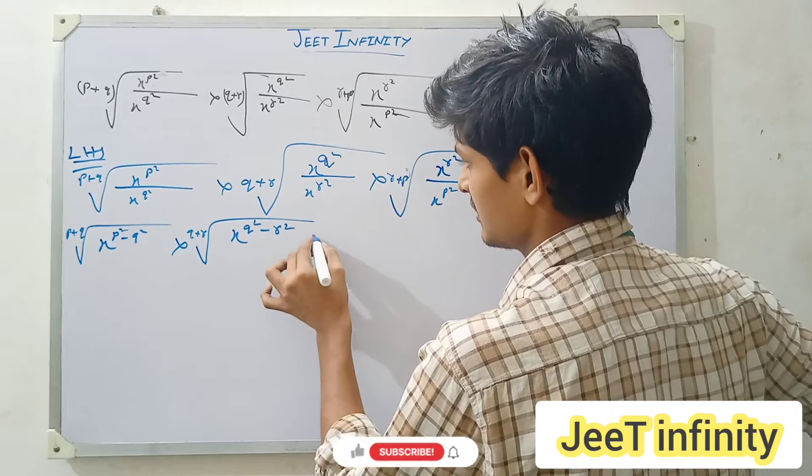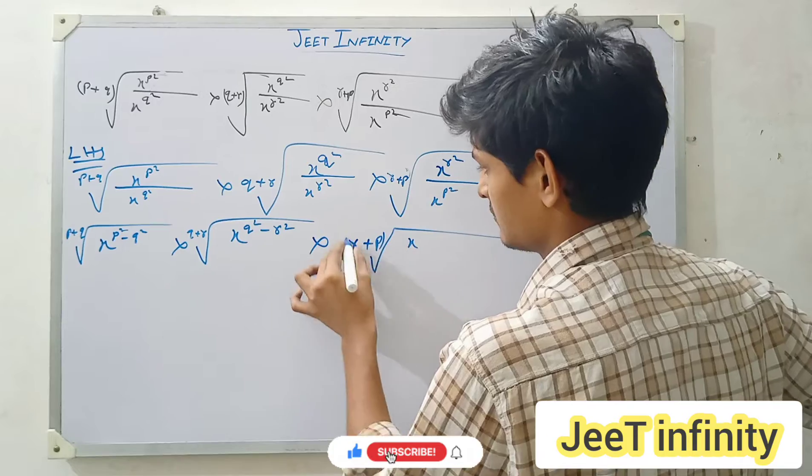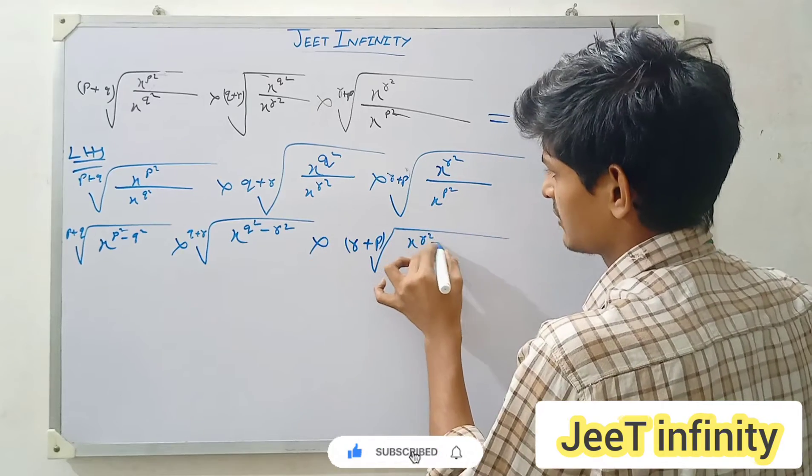Multiplied by (r plus p) root over x to the power r squared minus p squared.